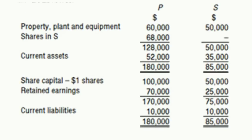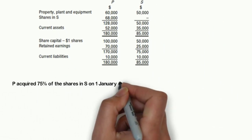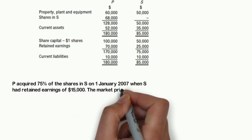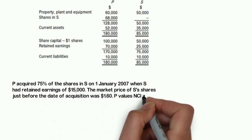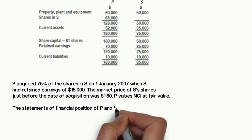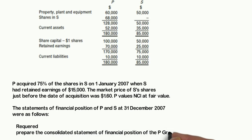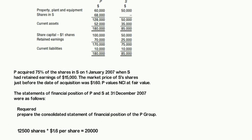In this question, P acquired 75% of S's shares — in other words, P acquired 37,500 shares out of 50,000. This gives P full control over the net assets of S and results in an NCI of 25%, or 12,500 shares. The NCI is measured at fair value, that is $20,000, made up of $1.60 multiplied by 12,500 shares.